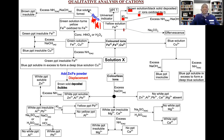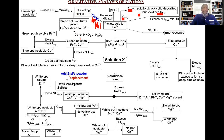The tests for iron(III) include: testing pH with universal indicator, adding potassium iodide to see a brown solution with the inference that iodide ions are oxidized to iodine, and adding potassium iodide followed by starch — since iodide is oxidized to iodine, adding starch gives a blue solution, which is the starch-iodine complex. Wherever you see a green solution, that is the color of either iron(II) ions or copper(II) ions.